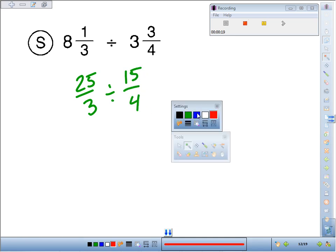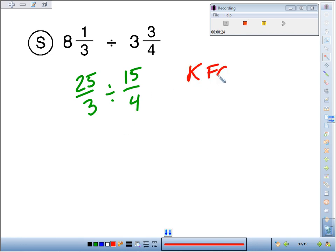Dividing by a fraction is difficult though, so instead what we want to do is multiply by the reciprocal, KFC. So we keep the first fraction 25/3, we flip the second fraction 4/15, and we change the symbol from division to multiplication.